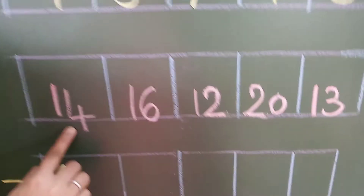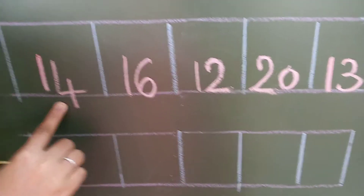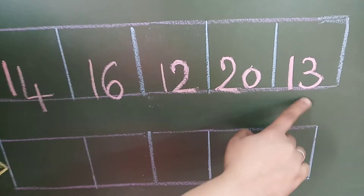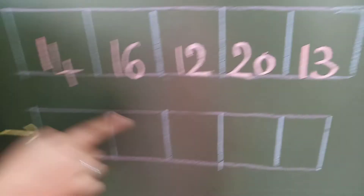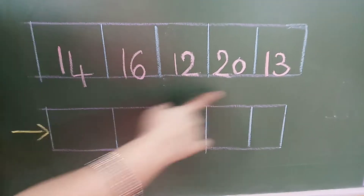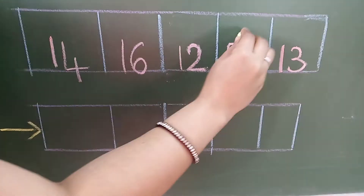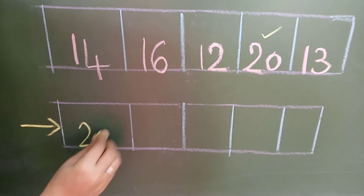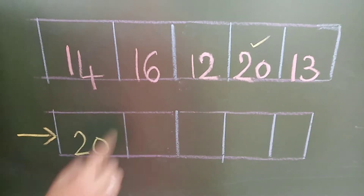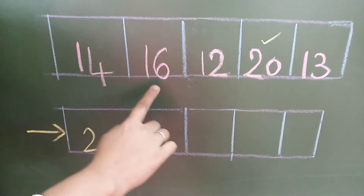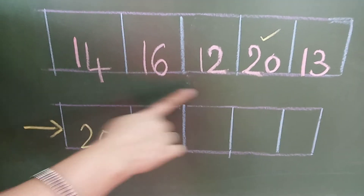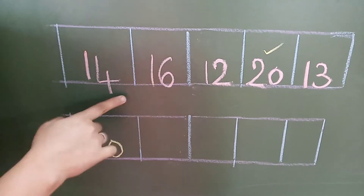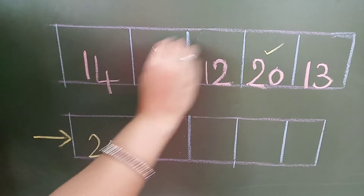Now let us jump to the next one. Number 14, number 16, number 12, number 20 and number 13. So you have to find out the biggest number first. Which number? Number 20. Then which number will come? Before 19 — not there. Then 18 — no. Then 17 — not there. Then which number? 16.